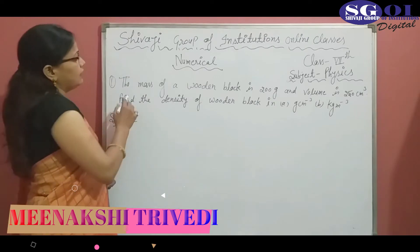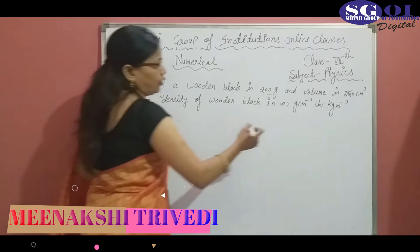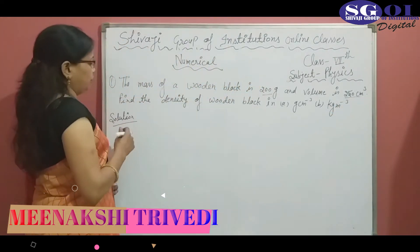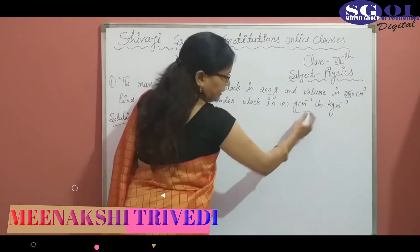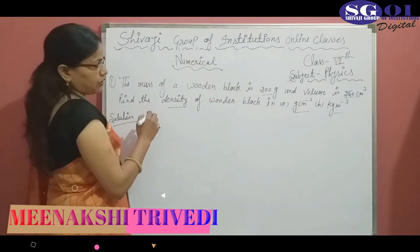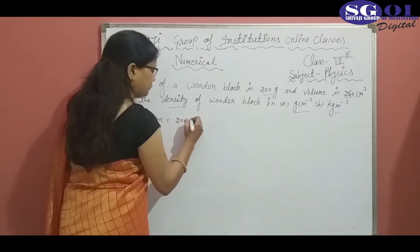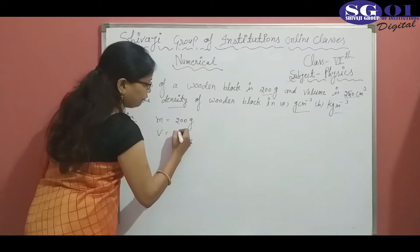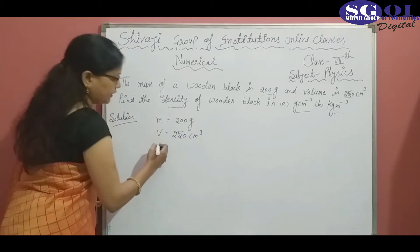The first numerical: the mass of a wooden block is 200 gram and volume is 250 cm³. Find the density of the wooden block in gram per cm³ and kilogram per meter cube. In this question, mass is 200 gram and volume is 250 cm³, and we have to find out density.